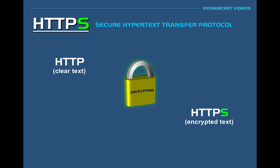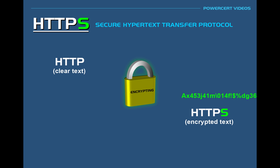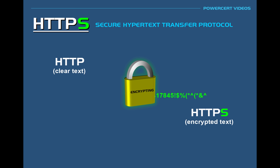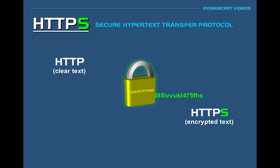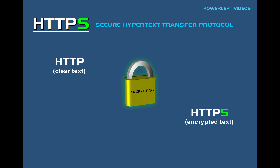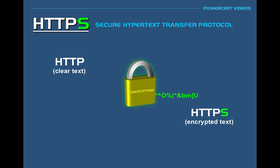By using secure HTTP, all the data — including anything that you type — is no longer sent in clear text. It's scrambled in an unreadable form as it travels across the internet. So if a hacker were to try and steal your information, he would get a bunch of meaningless data, because the data is encrypted and the hacker would not be able to crack the encryption to unscramble the data.